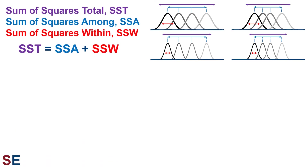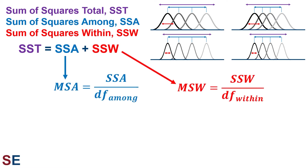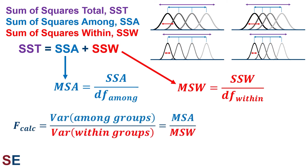We have our three sums of squares values and their relationship. If all variation was just caused by random noise, then SSA and SSW would both contribute to SST. To determine whether the differences between groups is larger than expected based on within-group variation, we convert the sums of squares into mean sums — variances — by dividing by degrees of freedom. We then use a one-tailed F-test, dividing MSA by MSW, to see whether we have evidence that the variance among the groups is significantly larger than the variance within the groups.